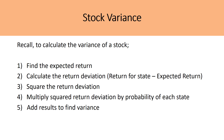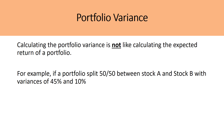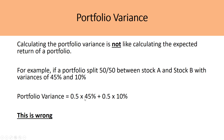Now, moving on to calculating the portfolio's variance — this is very important and where a lot of students make mistakes in their finance courses. Calculating portfolio variance is not like calculating the expected return of a portfolio. A common error is to multiply each stock's weighting by its individual variance and sum them — for example, 0.5 × 45% + 0.5 × 10%. This is wrong. Instead of following the expected return procedure, we have to recall and follow the stock variance procedure.